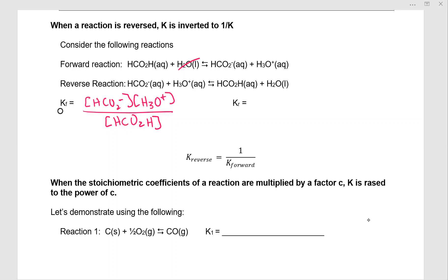Now let's write K for the reverse reaction. We're going to cross out water and we have HCO2H divided by the product of HCO2 minus and the hydronium ion H3O plus. Oh look, it's just the flipped fraction. So K reverse is 1 over K forward.